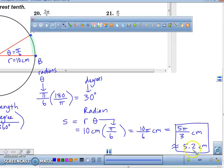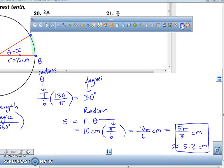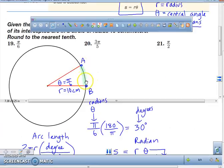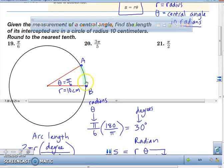So right now, all I want you guys to write down for problem number 19, it's 5.2 centimeters. The reason why I drew the picture is to help you understand this is what you're looking for. When you're looking for arc length, that's what you're looking for.